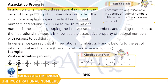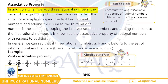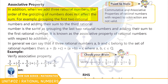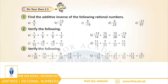بچو اگر ہمارے پاس تین rational numbers ہیں اور ان کو ہم کسی بھی order میں جمع کریں تو ہمارے پاس جواب same ہی آئے گا۔ بچو exercise میں سے کچھ سوال حل کرتے ہیں۔